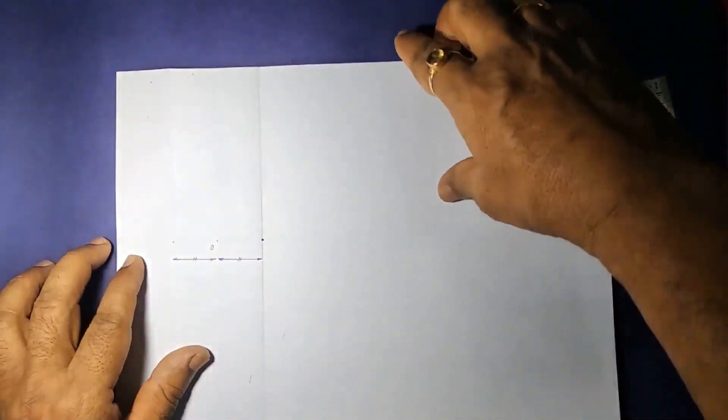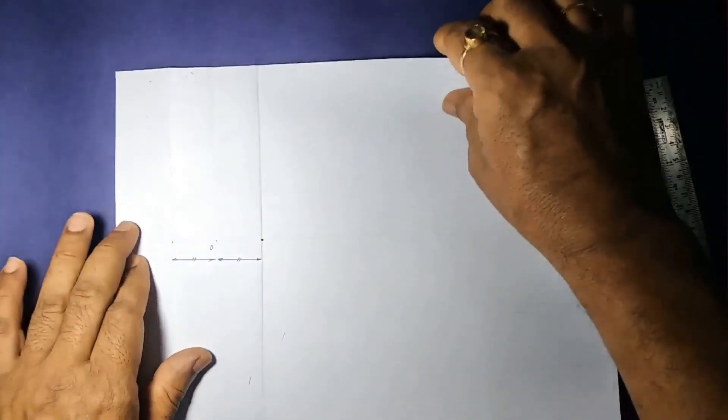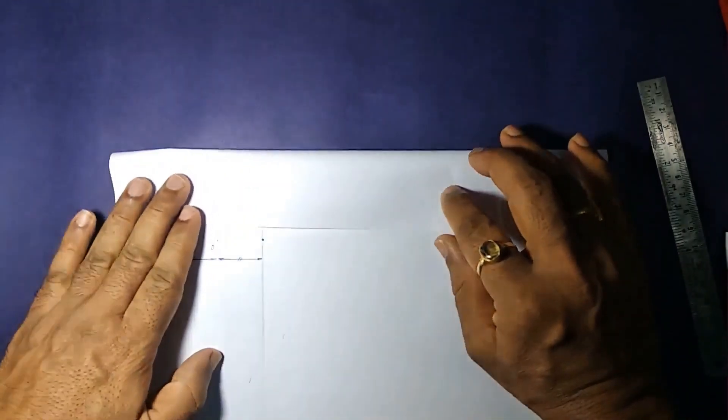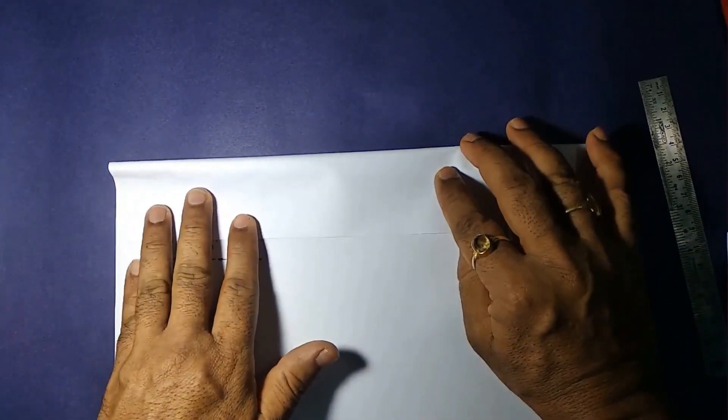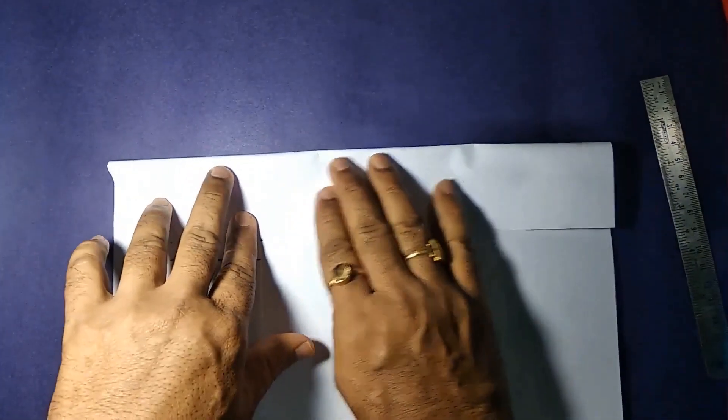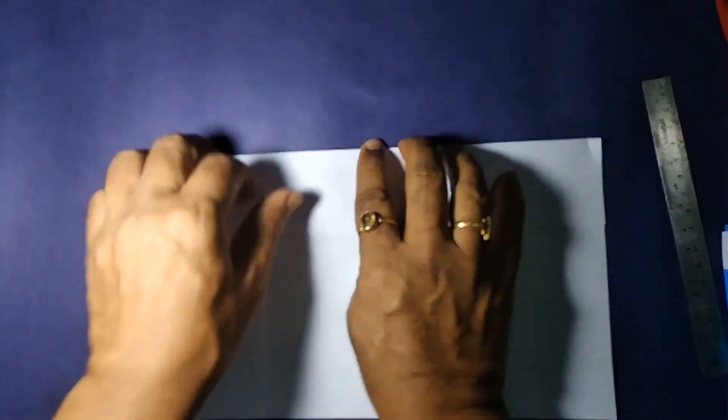And now we will make more parallel lines to the axis, the horizontal line. We are making more horizontal lines which are parallel to the original horizontal line.